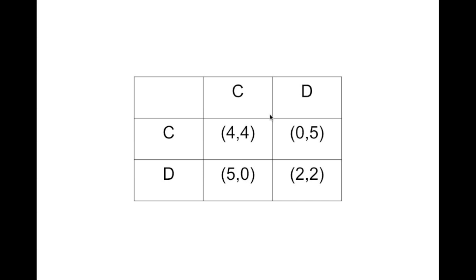Here's a prisoner's dilemma. Assume you're trying to maximize your utility, and the social optimal is when both players cooperate — they'd get a 4. However, if I'm a row player and I'm cooperating, it's in your interest as a column player to defect, and then it's in my interest to defect, and so that's a Nash equilibrium there.